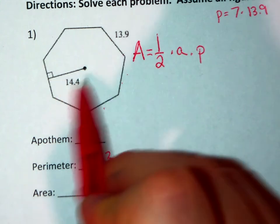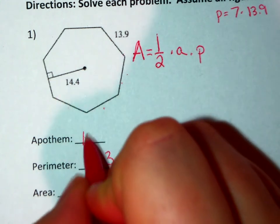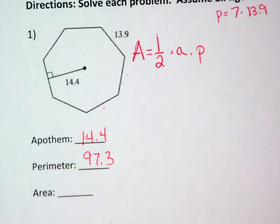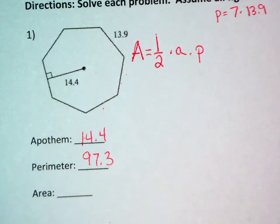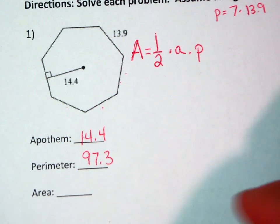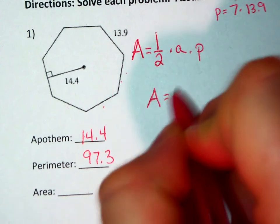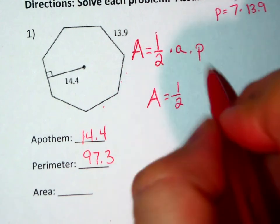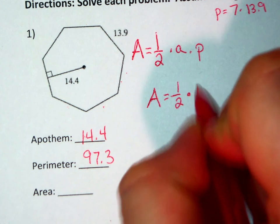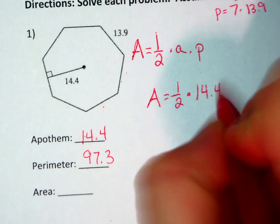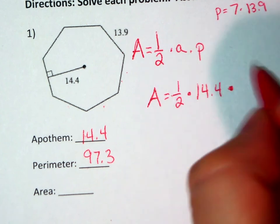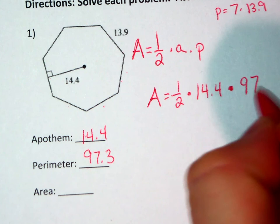My apothem is already given to us, 14.4. To find the area, and recall that you're going to have to show your work for each problem, A equals 1/2 times the apothem, 14.4, times the perimeter, 97.3.